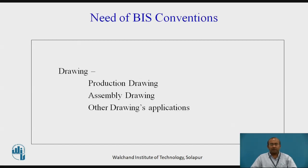Let us go with the need of BIS Conventions. As we had seen earlier, you might be knowing the various types of drawings: production drawings, assembly drawings, other drawings, applications also, with the help of drawing methodologies like maintenance drawings, and drawings used for identification of faults. Whenever we are talking about production drawings, it is a drawing used for manufacturing the respective geometry, rather the part, in the organization, with the help of distinct methods of manufacturing, where the particular drawings need to be easily readable without much complexity, easily understood in terms of the relevance of dimensions and geometries, and many more.